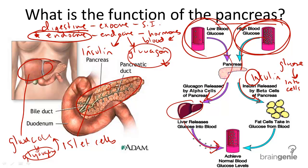Now, back to diabetes. When someone has diabetes, it means that the body is unable to produce enough insulin, and therefore normal blood glucose levels are difficult to maintain, causing major symptoms such as frequent urination, extreme hunger, blurred vision, weight loss, and others. A more serious consequence of diabetes could be diabetic shock, seizure, and even death.